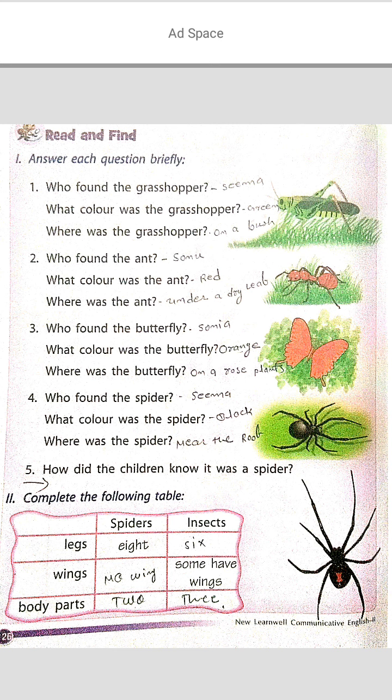Second question: who found the ant? Sonu found the ant. What color was the ant? Red color. Where was the ant? Under a dry leaf. Pause the video and complete this exercise quickly.